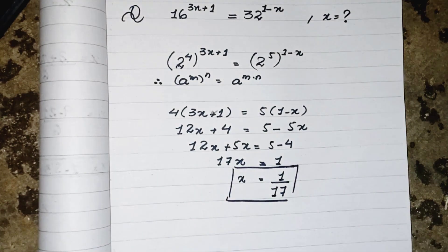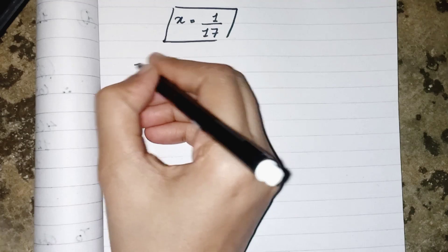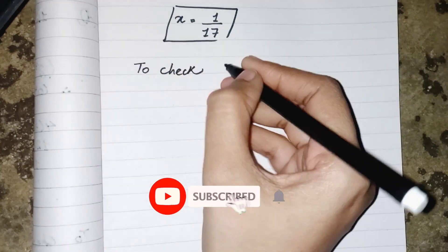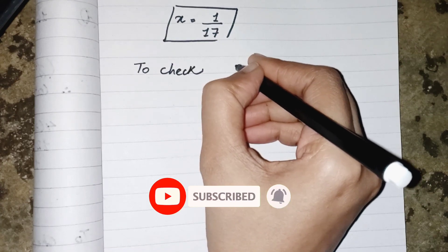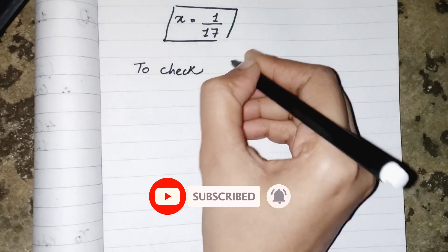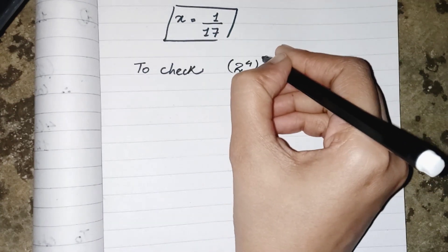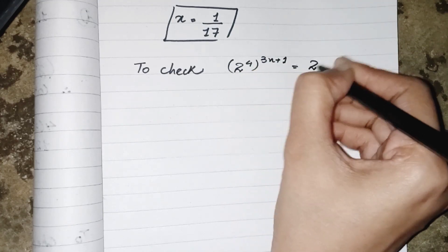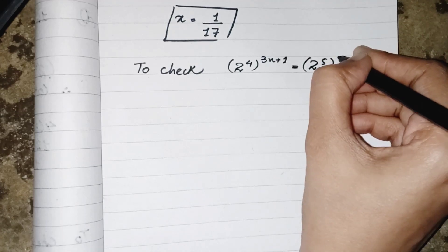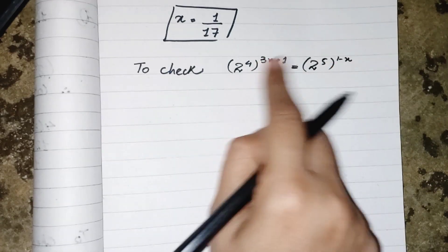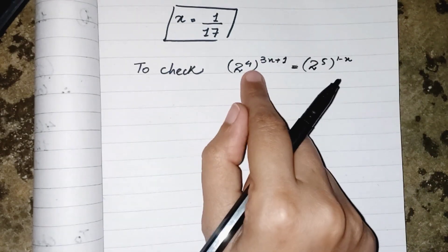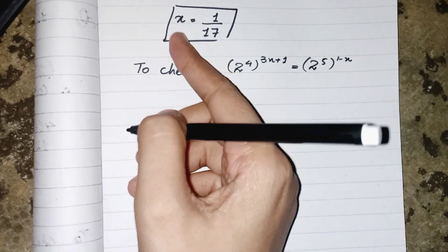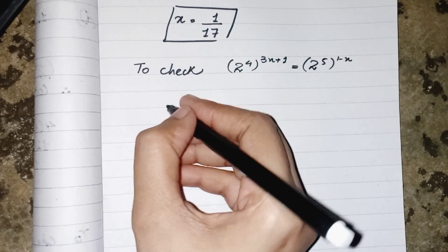Now we have to check whether this is the correct value of x or not. To check, our equation is 2's power 4 whole power 3x plus 1 equals to 2's power 5 whole power 1 minus x. We are just equating the powers to check whether our desired value of x is right or not.